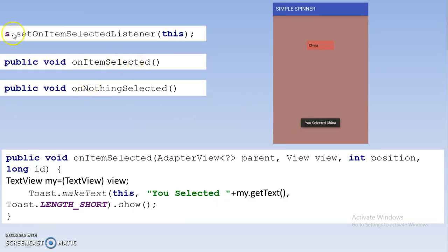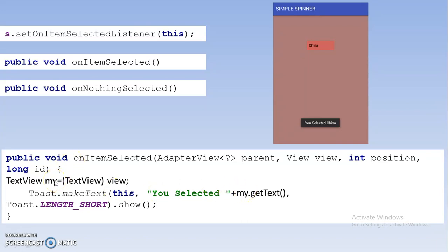After that you can do event handling. You select the onItemSelectedListener, and two methods will be added. The important method is onItemSelected. Inside onItemSelected, you create a TextView object, because we are showing the element selected inside a TextView. You write TextView tv = (TextView) view, then use tv.getText() which returns the text of the selected item. So whatever item is selected — for example, China — you will get the message 'You selected China'.